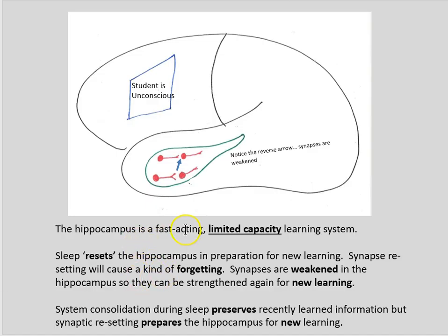So the hippocampus is a fast-acting, limited capacity learning system. Sleep resets the hippocampus in preparation for new learning. Synapse resetting will cause a kind of forgetting. The synapses are weakened in the hippocampus so they can be strengthened again for new learning. And system consolidation during sleep preserves recently learned information, but synaptic resetting prepares the hippocampus for new learning.